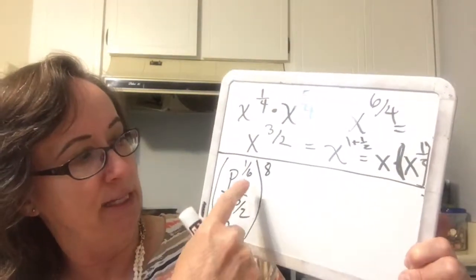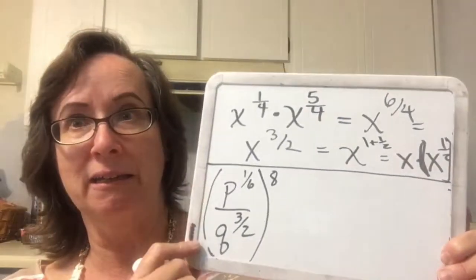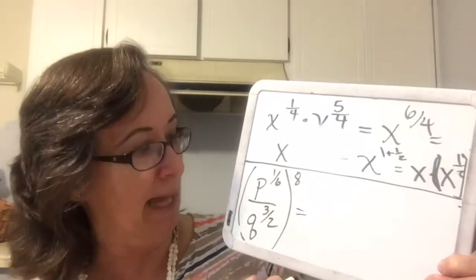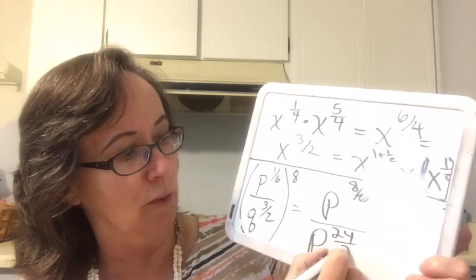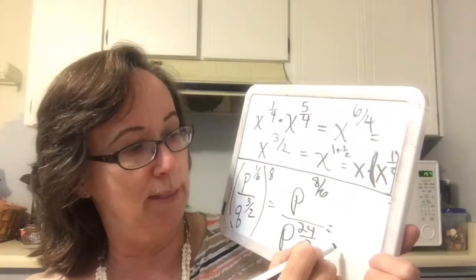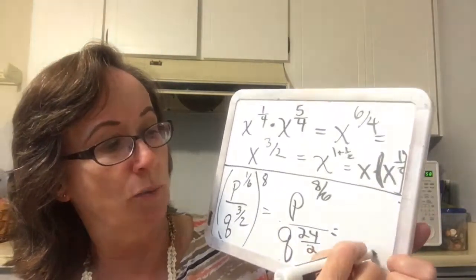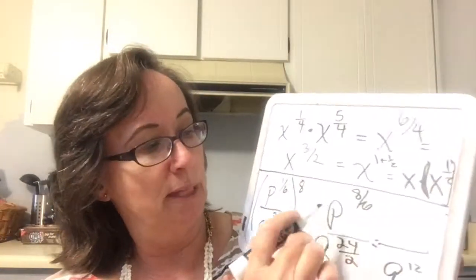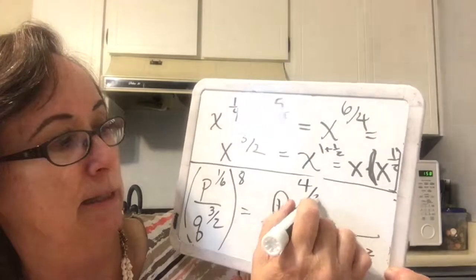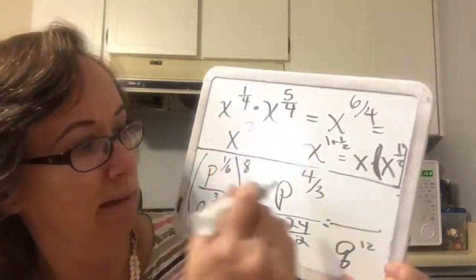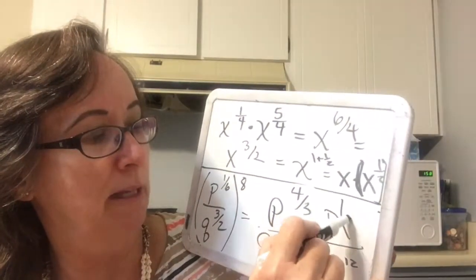The last one on this board — I've got a P and a Q, so I can't combine them. I'm going to raise each one to the 8th power: P to the 8/6, which reduces, and Q to the 24/2, which reduces. Q to the 24/2 becomes Q to the 12. The P becomes P to the 4/3, which is 1 plus 1/3, so that's P times P to the 1/3.